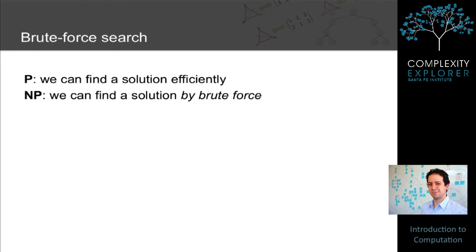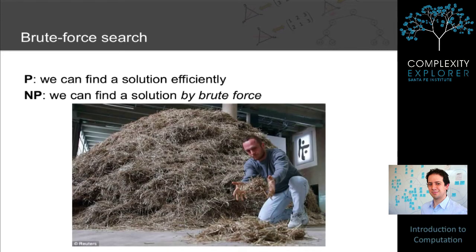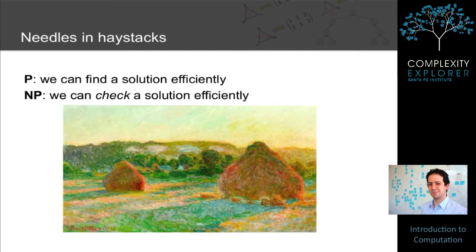The key idea here is the notion of a brute force search algorithm. P is the class of problems for which a solution can be found efficiently, and NP is the class of problems for which a solution can be found by brute force. This was often how you knew a problem was computable — because you could write a brute force algorithm for it. The formalization settled on in the 1970s, both in Russia and in the US, is that NP is the class of problems for which you can check a solution efficiently.